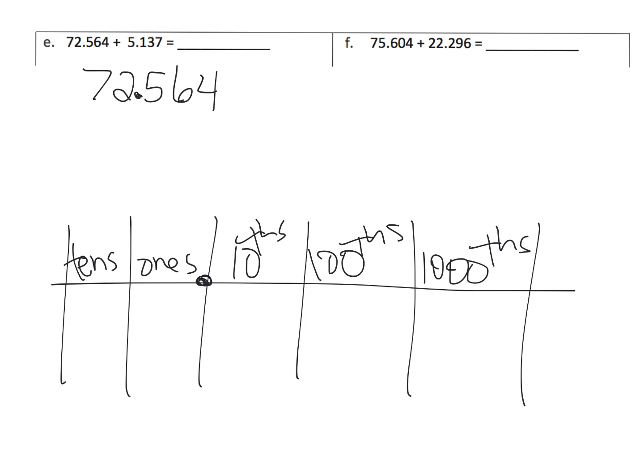If we were going to model 72.564, what would that look like? Well, if we were going to model it, it would look like 7 in the tens place. 1, 2, 3, 4, 5, 6, 7. It would look like 2 in the ones place. It would look like 5 in the tenths place. It would look like 6 in the hundredths place. And it would look like 4 in the thousandths place.